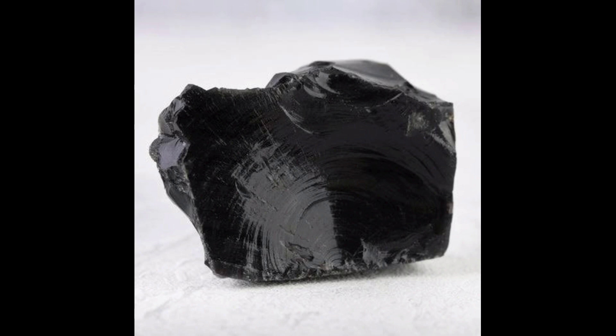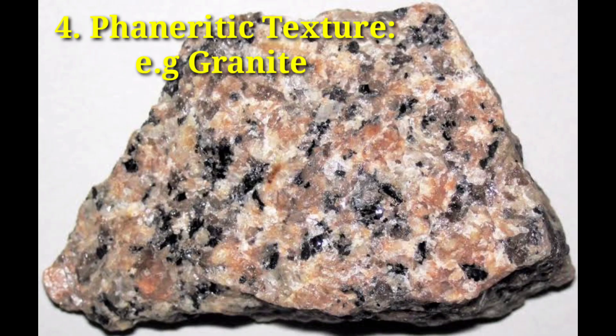4. Phaneritic texture. Quartz monzonite — mineral grains easily visible, several of them larger in size. Phaneritic rocks have mineral grains that are large enough to be seen with the naked eye or a hand lens, like this granite.